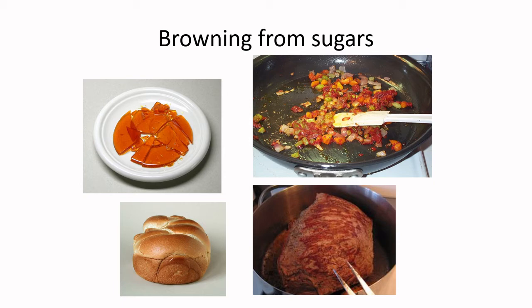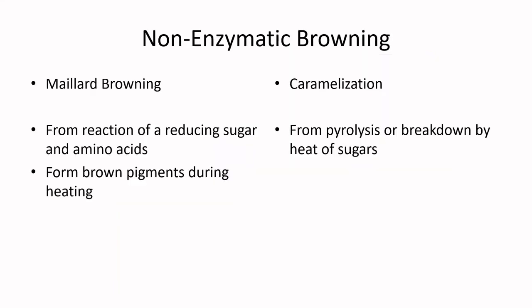When I was in my undergrad we had to memorize all the structures of Maillard products, but from a product development perspective, what matters is understanding the conditions required. For Maillard browning, you need a reducing sugar — an aldose sugar — and amino acids, and it forms those brown pigments during heating. Caramelization is the breakdown of sugars alone from very high heat. Maillard browning occurs at slightly lower temperatures.